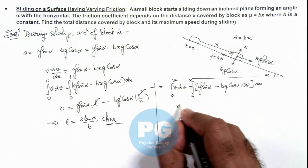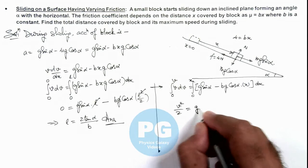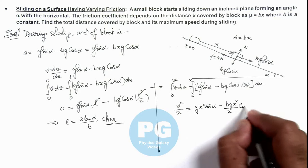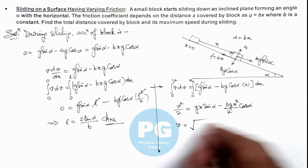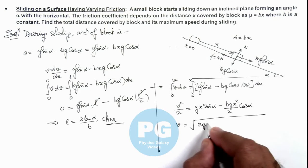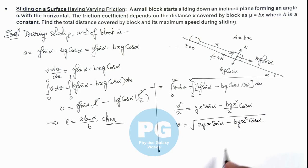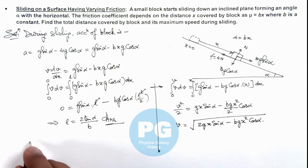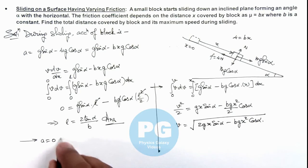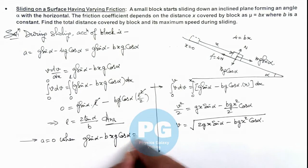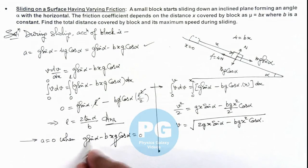Integrating, v squared over 2 equals gx sine alpha minus bg cosine alpha times x squared over 2. So the speed is the square root of 2gx sine alpha minus bgx squared cosine alpha. The maximum speed occurs where acceleration is zero, i.e., when g sine alpha minus bxg cosine alpha equals zero. Cancelling g, the value of x at maximum speed is x equals tan alpha divided by b.